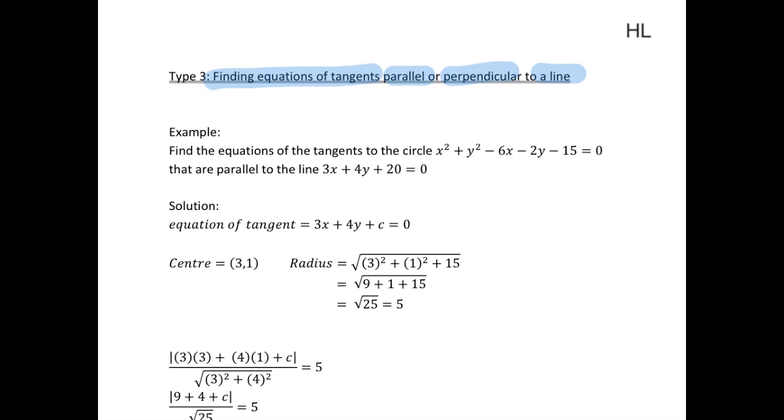So in our example here, we're asked to find the equations of the tangents, so there's going to be multiple answers here, to the circle x squared plus y squared minus 6x minus 2y minus 15 equals 0 that are parallel to the line 3x plus 4y plus 20 equals 0.